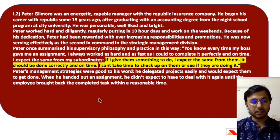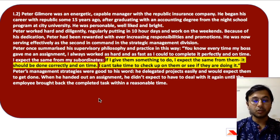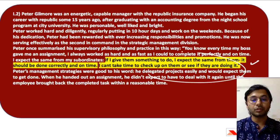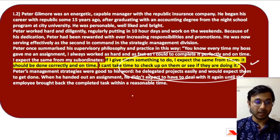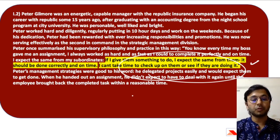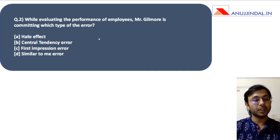Please pause the video for a while and go through the entire case study. It's an important case study about Peter Gilmore, a manager with an insurance company who is guiding his subordinates and telling them his expectations. He expects tasks to be correctly done and on time, and he cannot take time to check up on them. That means he does not want them to disturb him once tasks are assigned — they should not need to come to him for guidance after the task has been allocated. The question is: while evaluating the performance of employees, Mr. Gilmore is committing which type of error?